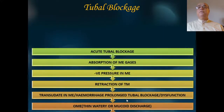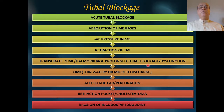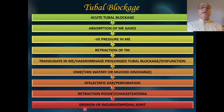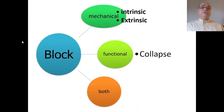Samter's triad — associated with asthma, nasal polyps, and aspirin sensitivity — can lead to tubal blockage. Tubal blockage leads to absorption of middle ear gases, negative pressure in the middle ear, retraction of the tympanic membrane, and transudate or even hemorrhage with prolonged dysfunction. Subsequently there can be otitis media with effusion, atelectasis, perforation of the tympanic membrane, retraction pocket leading to cholesteatoma, and ultimately erosion of the incostapedial joint.